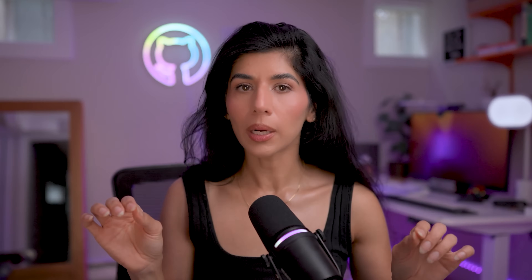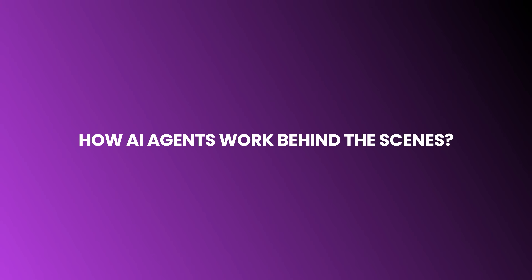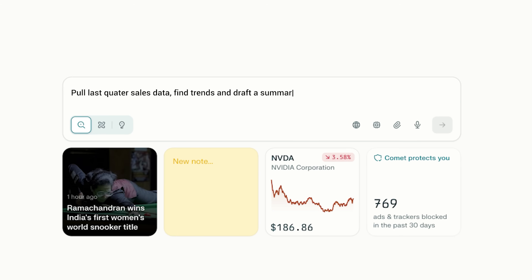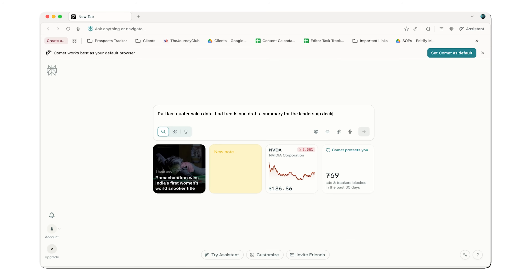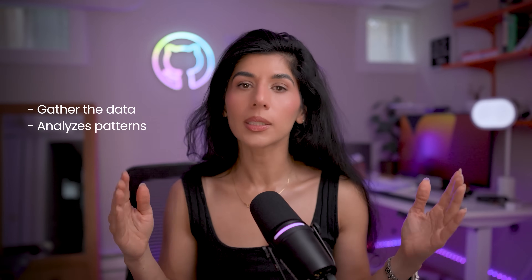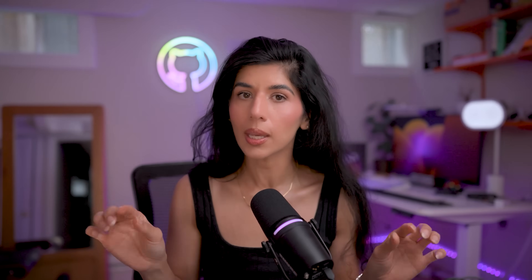Let's go a bit deeper and learn how AI agents work behind the scenes. Let's say you're asking an AI agent to pull last quarter's sales data, find trends, and draft a summary for the leadership deck. In seconds, it gathers the data, analyzes patterns, and creates charts. Now here's what's actually happening behind the scenes in a five-stage workflow.